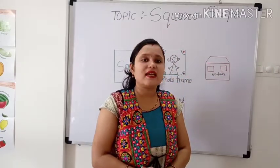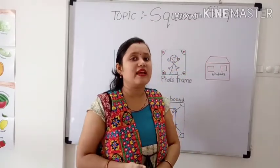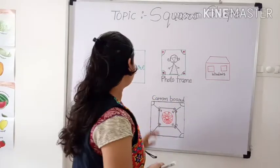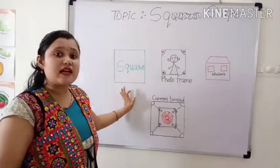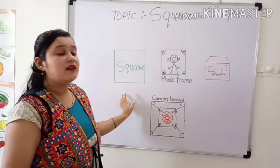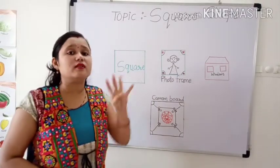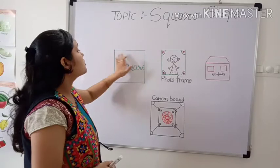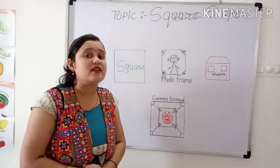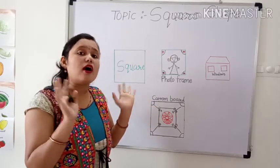Square shape. Today's topic is square shape. Okay, let's start. This is a square shape. Which shape is this? Square. And it has four corners. How many corners? Four. And a square has four equal sides. How many sides? Four equal sides, and they all are the same.